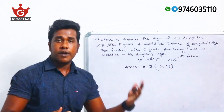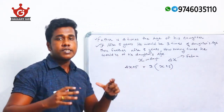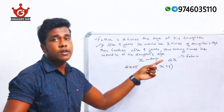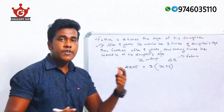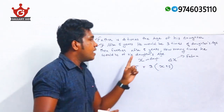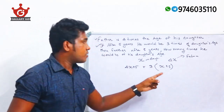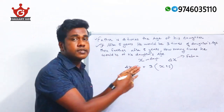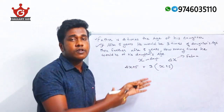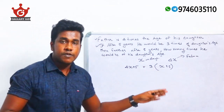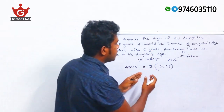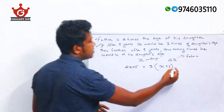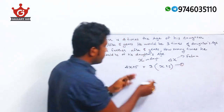We already assumed X is the present age of the daughter and 4X is the present age of the father. After five years the father's age is 4X + 5 and the daughter's age will be X + 5. According to the statement, 4X + 5 = 3(X + 5). Let this be equation one.